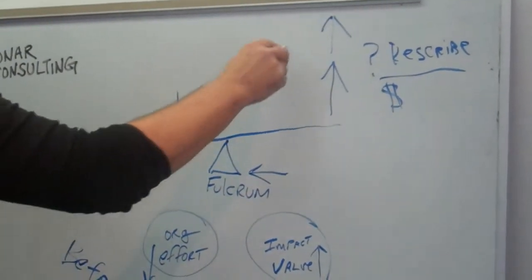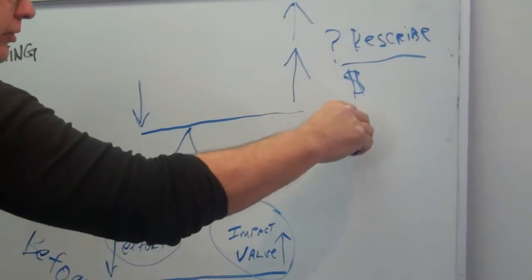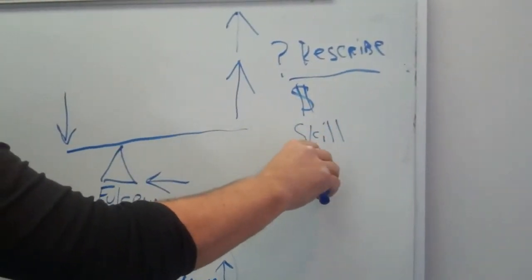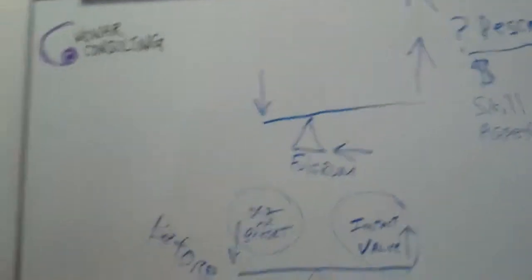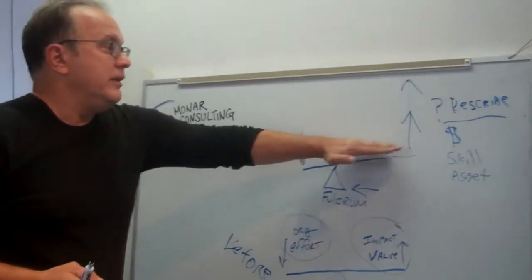And again, part of what you have to describe in dollar wise, skill wise, asset wise - what is it that you're bringing to the organization as a consultant or as an individual that's going to give them greater value.